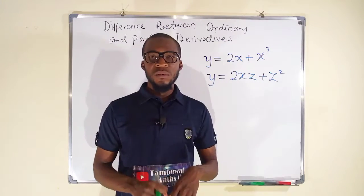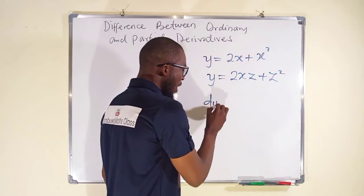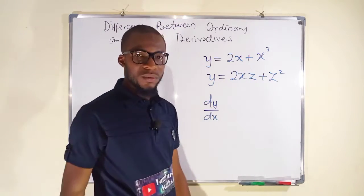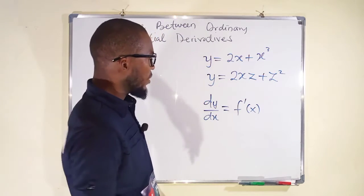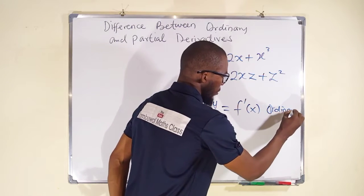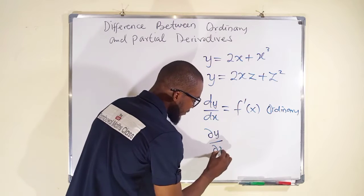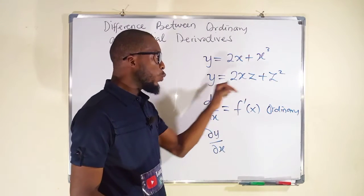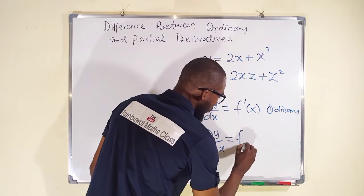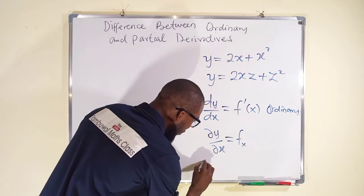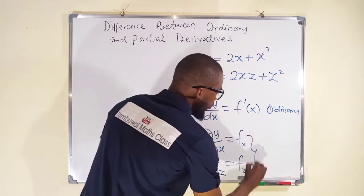To differentiate a function with respect to x, we use the notation dy with respect to dx — this is an ordinary derivative, sometimes written as f prime of x. For partial derivatives, we use the delta notation: del y over del x. If you are differentiating with respect to x alone, you keep z constant, written as f subscript x. Differentiating with respect to z while treating x as constant gives del y over del z, also written as f subscript z. Both of these are partial derivatives.